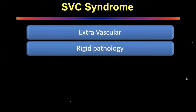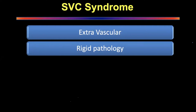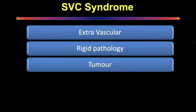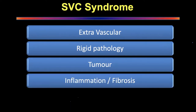Extravascular compression is usually because of a rigid pathology outside the SVC. The SVC is a collapsible structure, and any rigid pathology outside can compress it. Symptoms do not really appear until the patient is almost 90 to 95 percent compressed. The SVC accommodates external pressure, and the commonest source of that pressure is a tumor in the anterior mediastinal area.